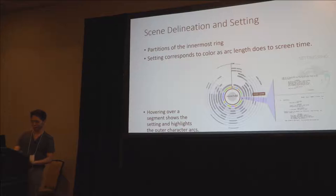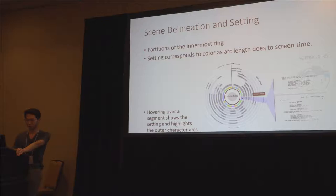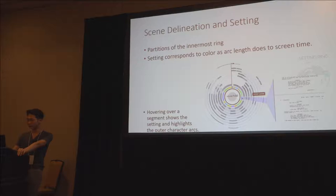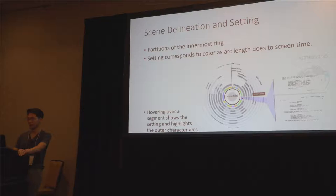The innermost ring, the very colorful ring, is for the setting, and this is partitioned into different segments according to different scenes. The colors on this ring correspond to unique settings, and if two different scenes at two different times have the same setting, they'll be in the same color. In addition to that, the arc length of a segment corresponds to the duration of the scene. By hovering over the segment, you can actually highlight the outer arcs so that you can easily identify the characters present in that scene.